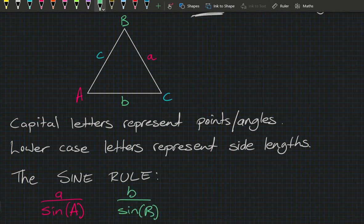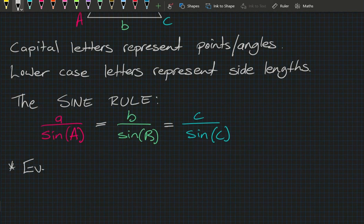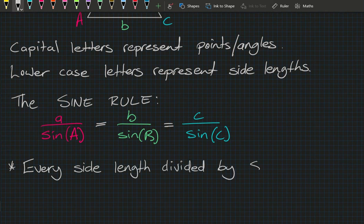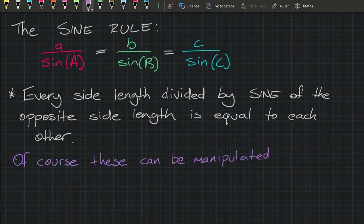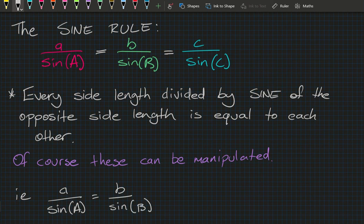The Sine Rule states that for a triangle labelled this way, side length a divided by sine of angle A equals side length b divided by sine of angle B, which also equals side length c divided by sine of angle C. In clear language: every side length divided by the sine of its opposite angle is equal to the others.